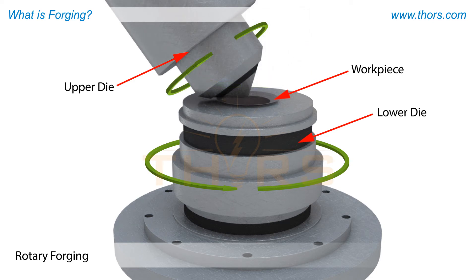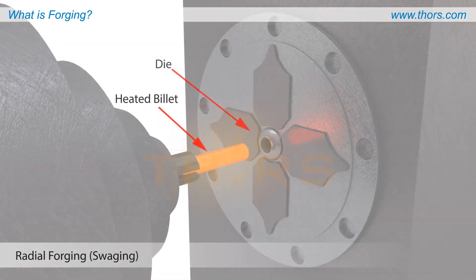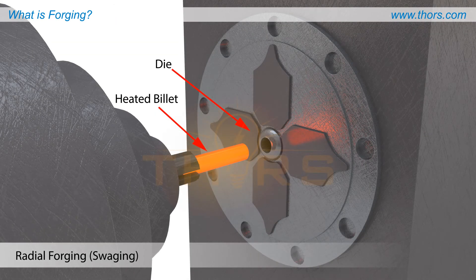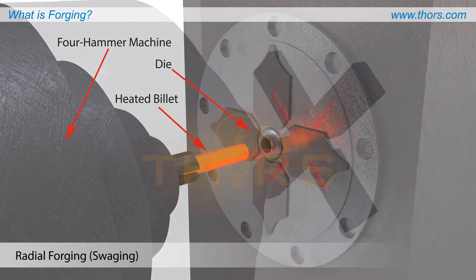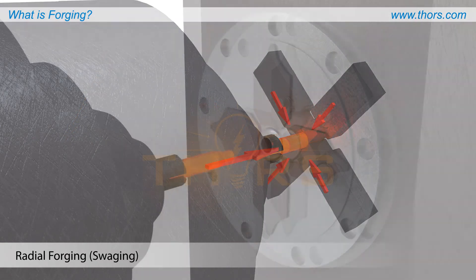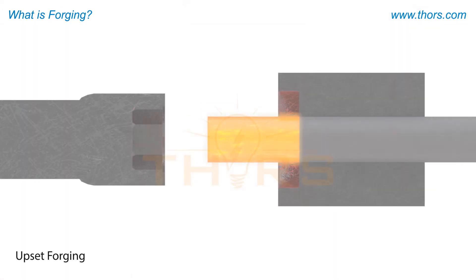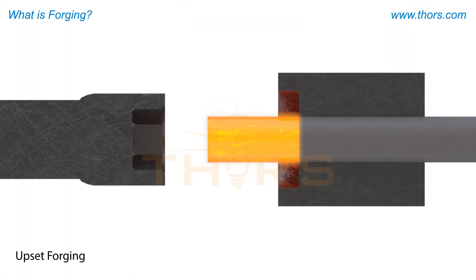Radial forging, or swaging, uses a four-hammer machine, helping with the deformation treatment of billets or ingots in alloy steel.